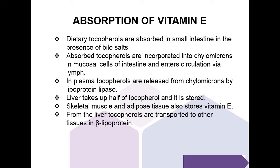The liver takes up half of the tocopherol and stores it. Skeletal muscle and adipose tissue also store vitamin E. From the liver, tocopherols are transported to other tissues in beta lipoprotein.